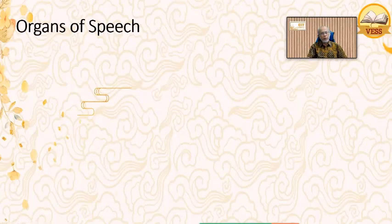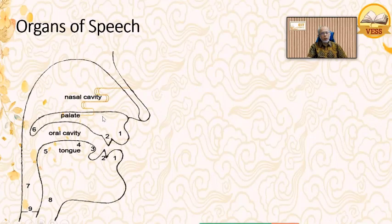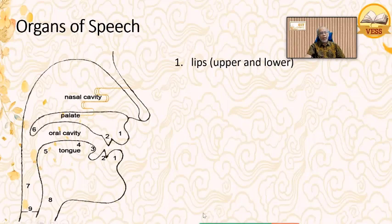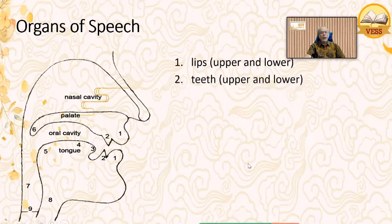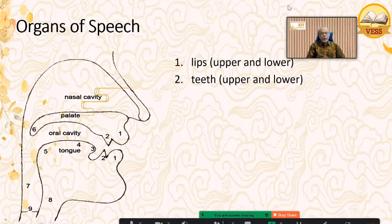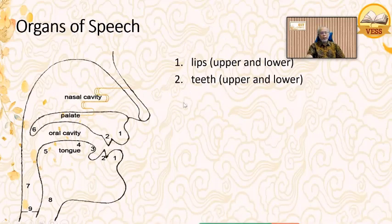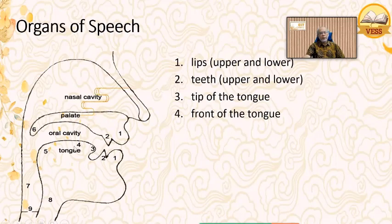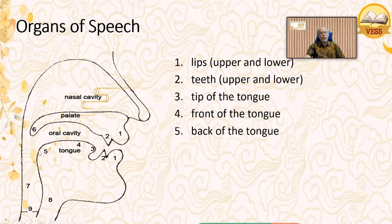Now let's talk about the production of consonants. This is the picture of our face — we have the nose, the lips, the teeth. Let's talk one by one about the speech organs. The first is the lips — we have the upper lip and the lower lip. Number two is the teeth — we have lower teeth and upper teeth. Number three is the tip of the tongue. And number four is the front part of the tongue, which moves up to produce a consonant.